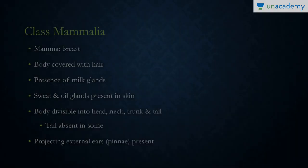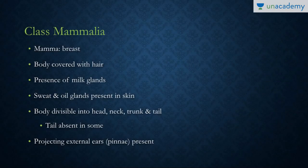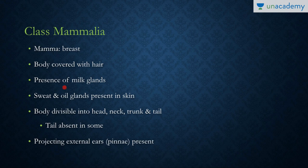Let's get started. We'll be talking about the class Mammalia. 'Mamma' means breast, so this group is characterized by having breasts which the female uses to nourish the younger ones. The body is covered with hair, and there is presence of milk glands, as well as sweat and oil glands present in the skin.